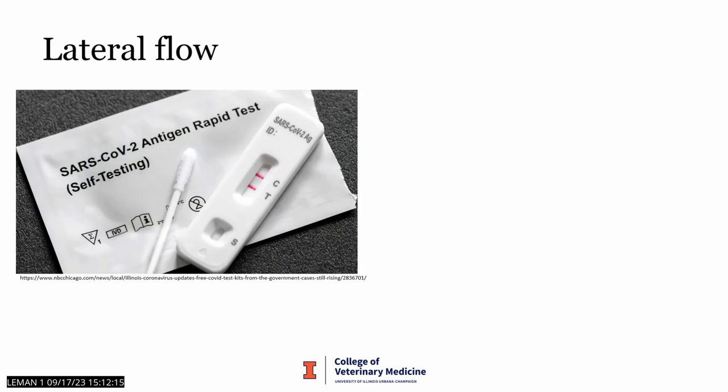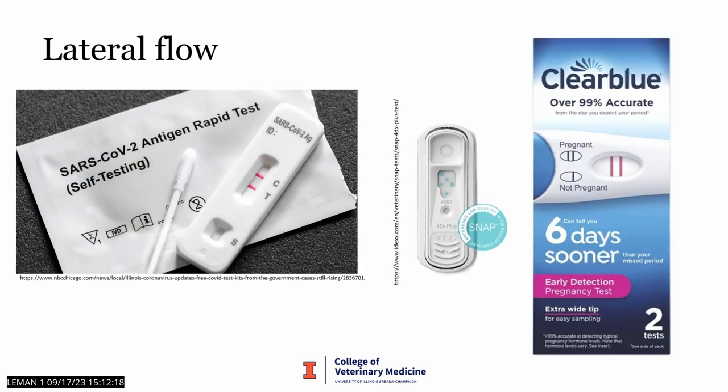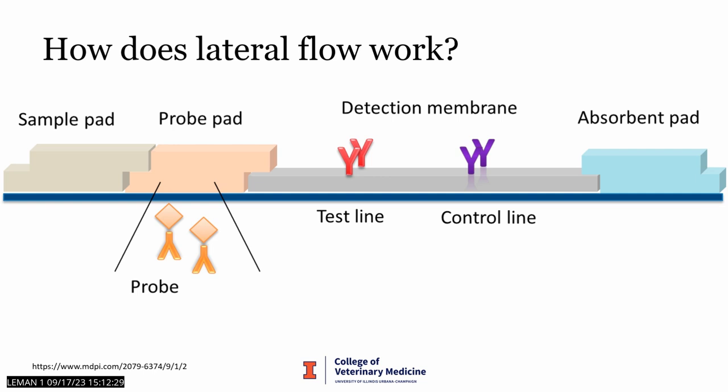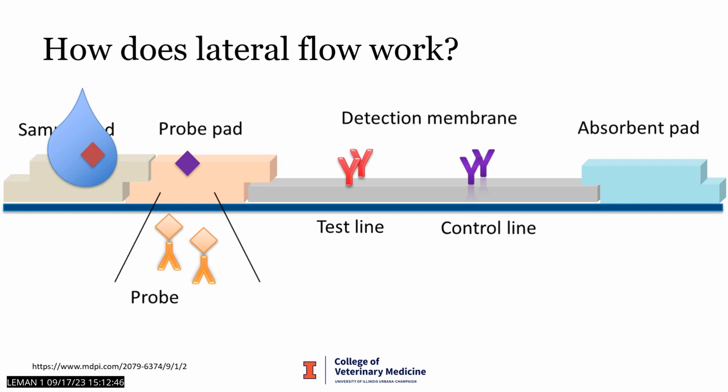We are all familiar with lateral flow devices: at-home COVID tests, IDEXX SNAP kits in veterinary clinics, and home pregnancy tests. Lateral flow tests have been part of the point-of-use testing world from the beginning in the 1980s. A lateral flow test is made up of a series of absorbent pads embedded with antibodies to capture conjugated antigen or a test control molecule. A liquid sample is placed on the sample pad and drawn by capillary action toward the absorbent pad on the opposite side.